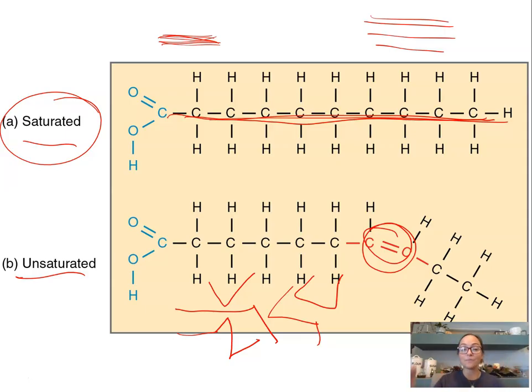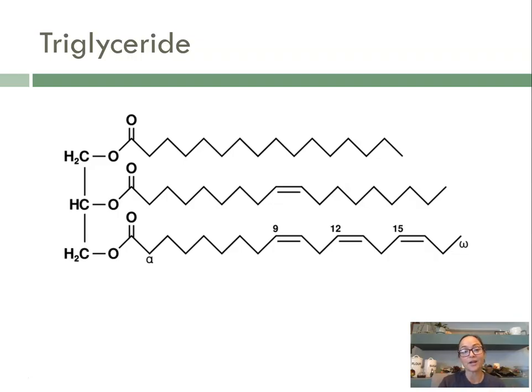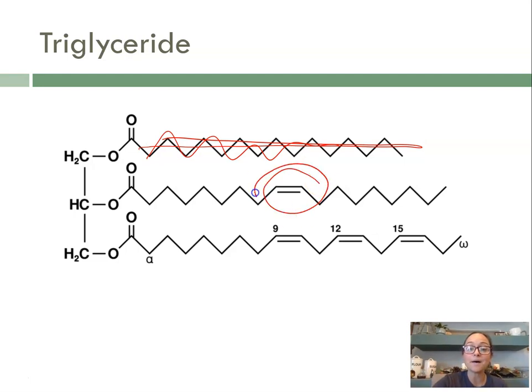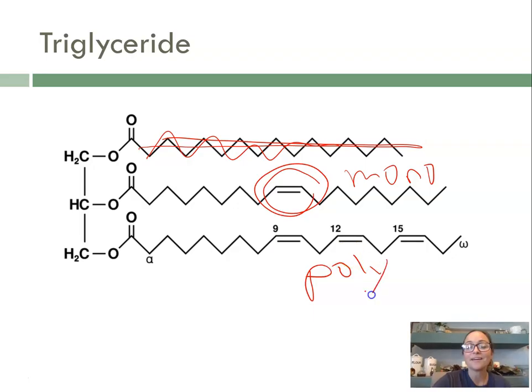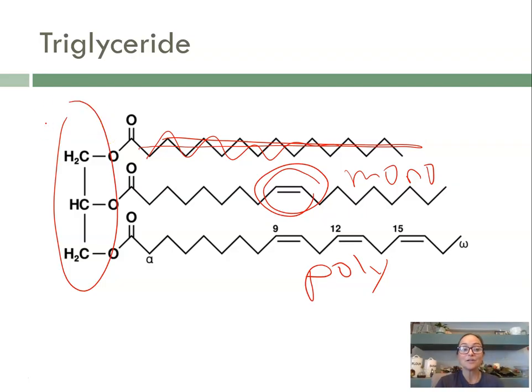Sometimes you'll see a triglyceride instead of drawing out all of those carbons and hydrogens like this. Here this would be your saturated fatty acid, and this would be unsaturated. This is actually a mono-unsaturated for just one double bond, and then here you have a poly-unsaturated because there's multiple double bonds. You see your glycerol over here, so we have our glycerol attached to three fatty acids.